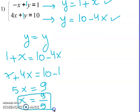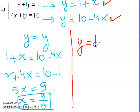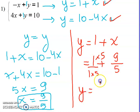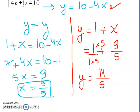Now that we have x, we need to find y. We can use either of the two equations. Using y equal one plus x (the easier one): y equal one plus nine over five. Making a common denominator — times five over five — gives y equal five plus nine over five, which is fourteen over five. So the solution is (nine over five, fourteen over five).